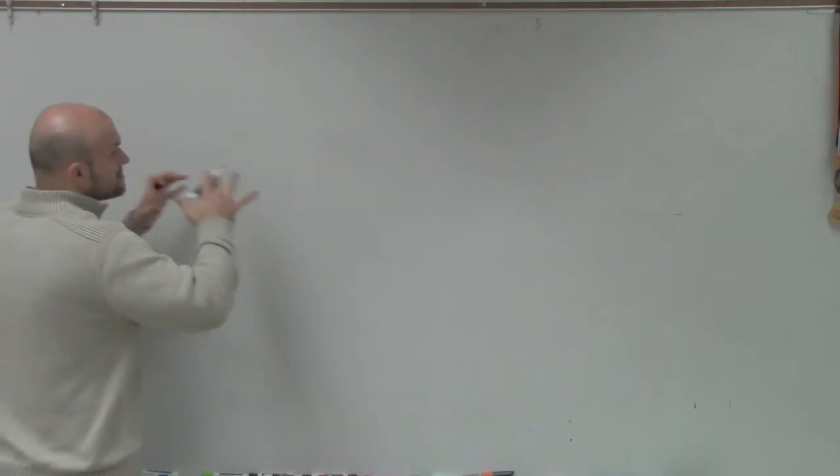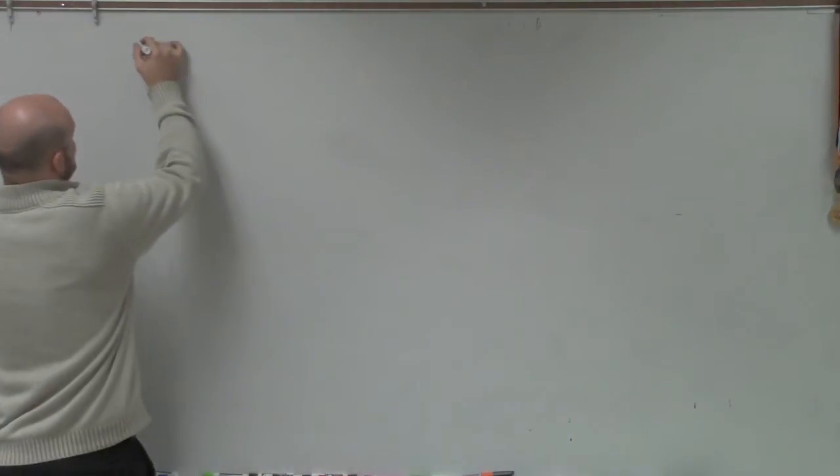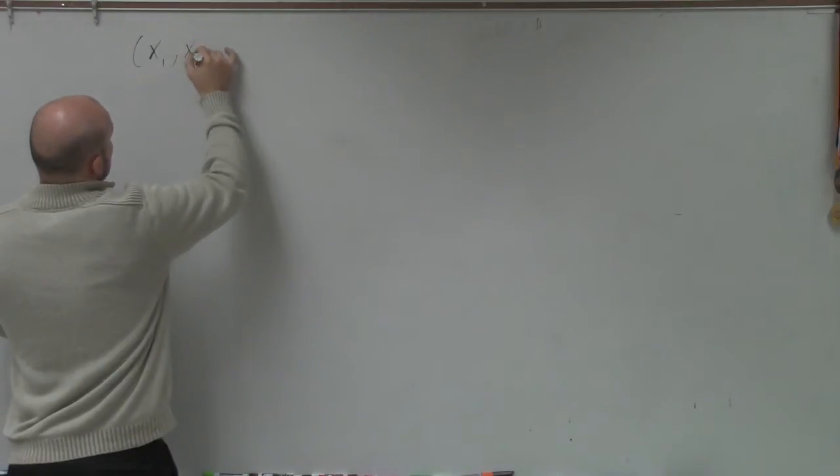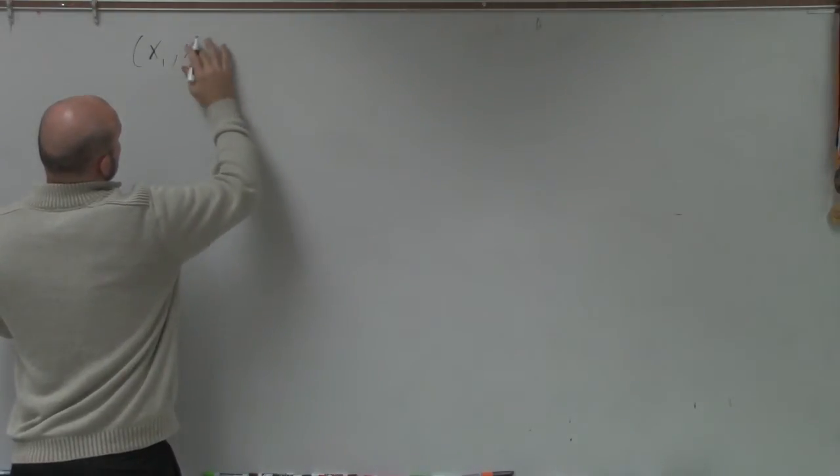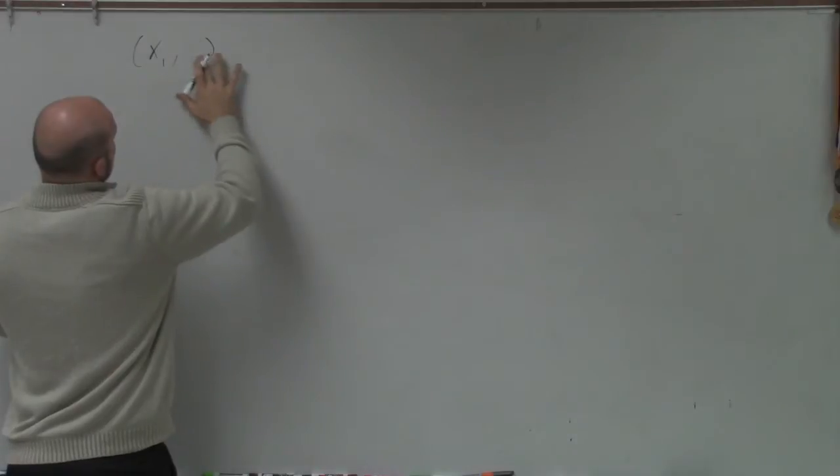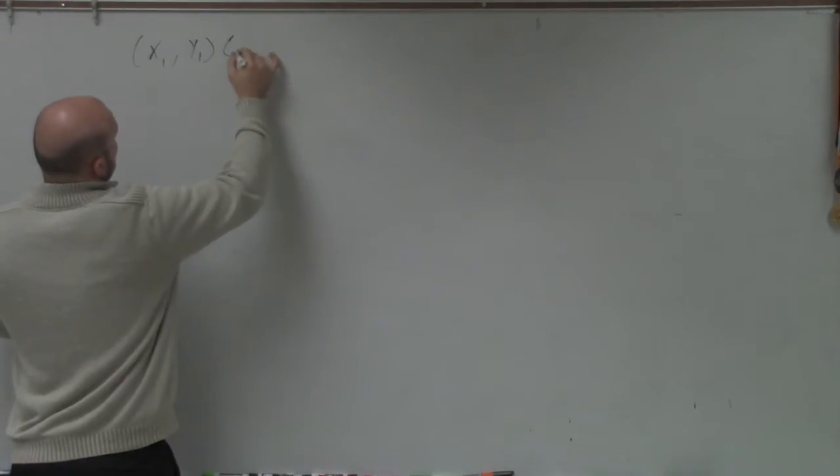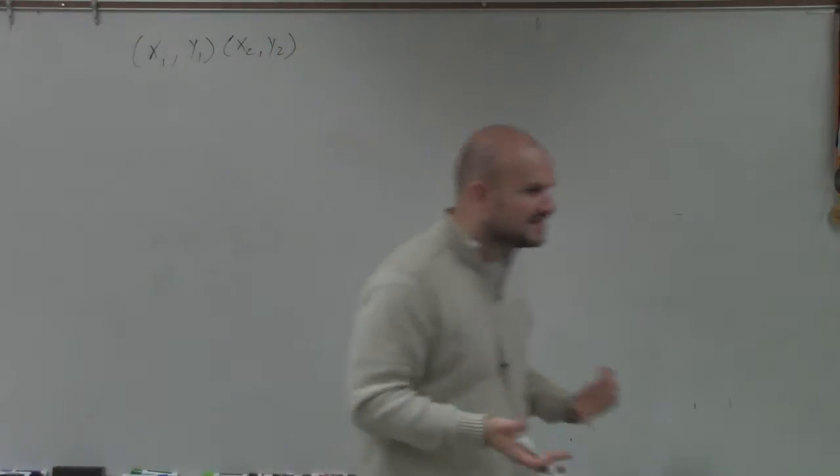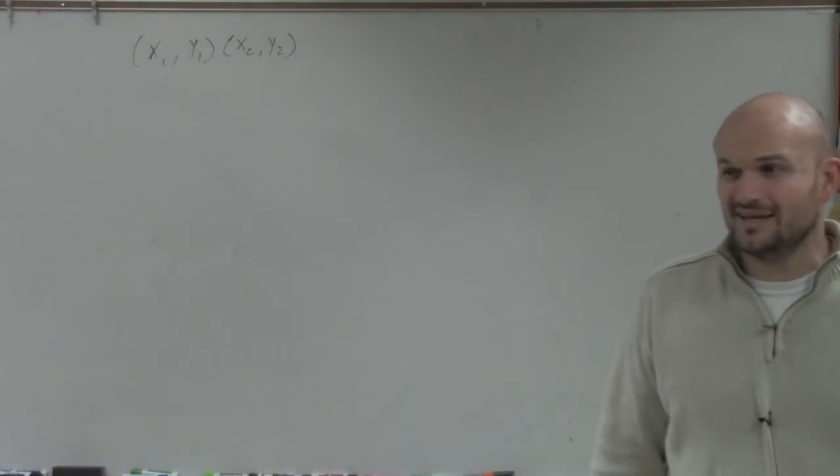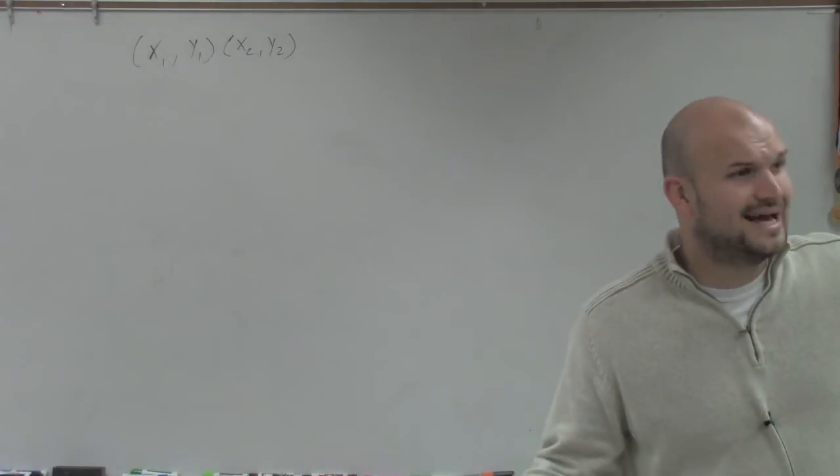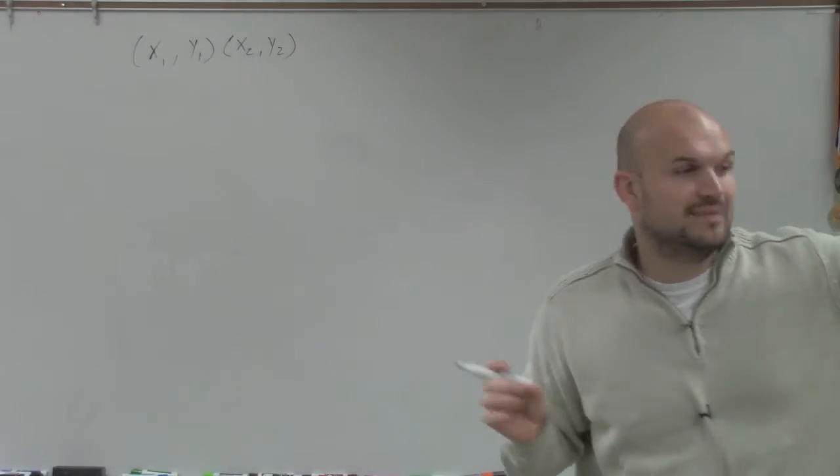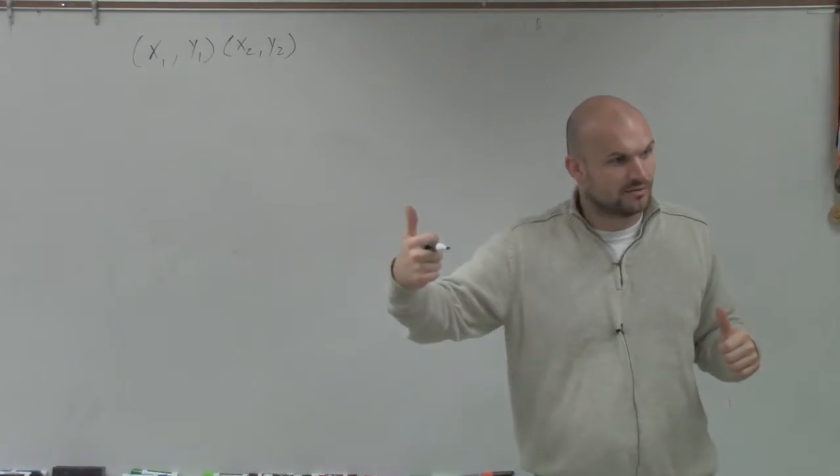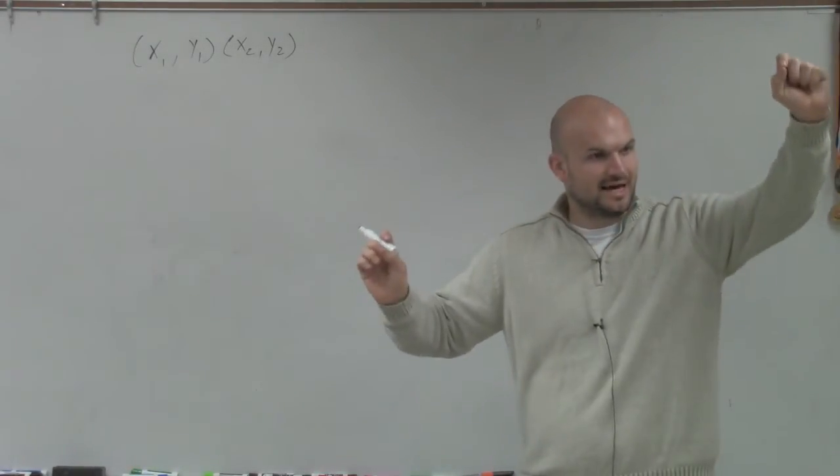So the first thing I want to talk about is what exactly a vector is. Remember, we talked about a vector with two coordinate points, x1, y1 and x2, y2. The first thing I introduced with vectors was really just like two coordinate points connected, but it's what we call a directed line segment, meaning that one of the points is initial and one of the points is terminal. One you start at, one you end at.